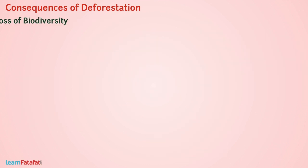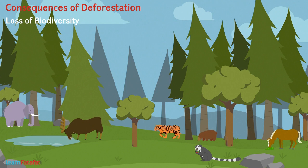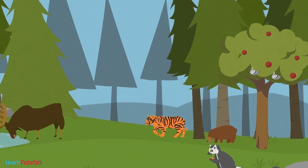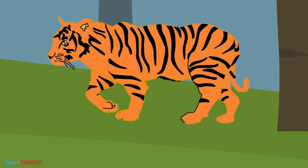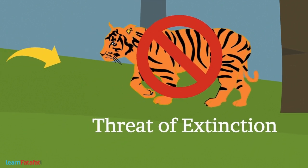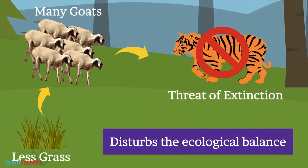Loss of biodiversity. We know that forests are home to many plants and animals. We are cutting forests, thereby destroying their homes. Today, many plants and animals are under the threat of extinction, which in turn disturbs the ecological balance in nature.